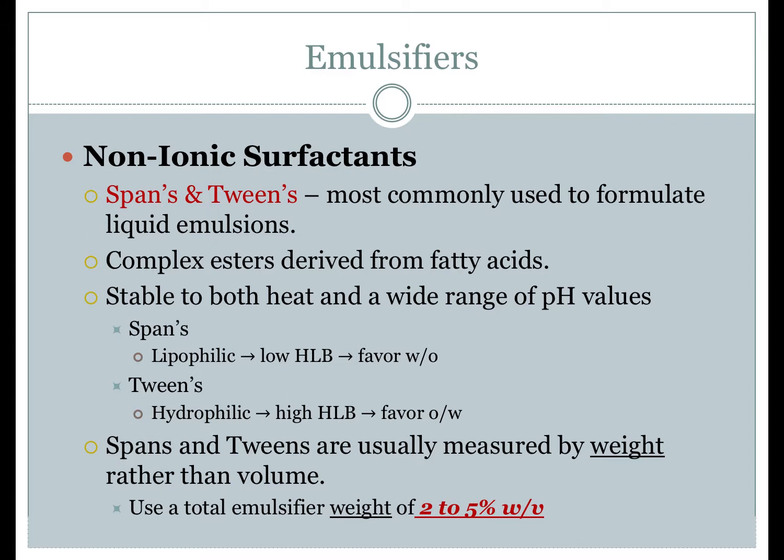One common technique is to use an empty syringe placed on an electronic balance. The balance is zeroed, the syringe removed, and the plunger completely pulled out backward. The syringe is then backfilled with the desired emulsifier, the plunger reinserted carefully, and then weighed and re-weighed as product is expelled through the tip until the desired weight is obtained. When the desired weight is reached, the emulsifier in the syringe is completely expelled into the final compounding bottle.